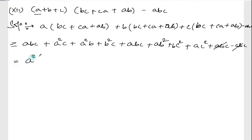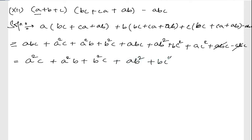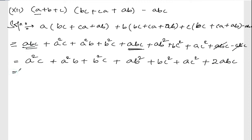We can now write this as: a²c + a²b + b²c + ab² + bc² + ac². For the remaining abc terms — abc + abc + abc — that gives plus 2abc.